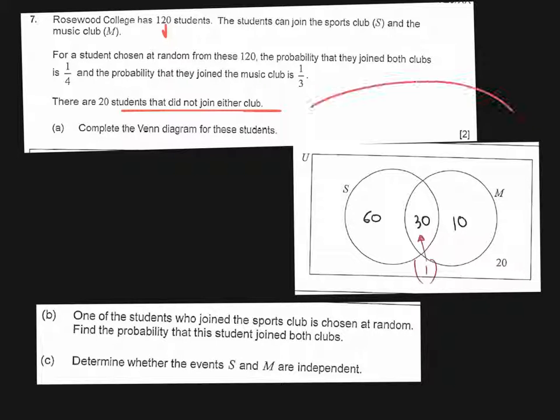So straight away on our Venn diagram we are going to have 20 students outside here. Inside the Venn diagram you're going to have two overlapping circles. So here we've got sports and here we've got music.